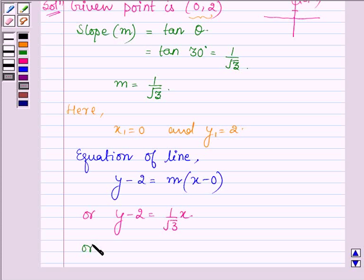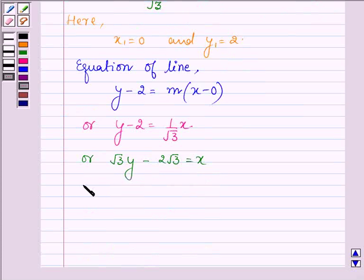Or we have y - 2 equals 1 upon root 3 into x, or root 3y minus 2 root 3 equals x, or x minus root 3y plus 2 root 3 equals 0.